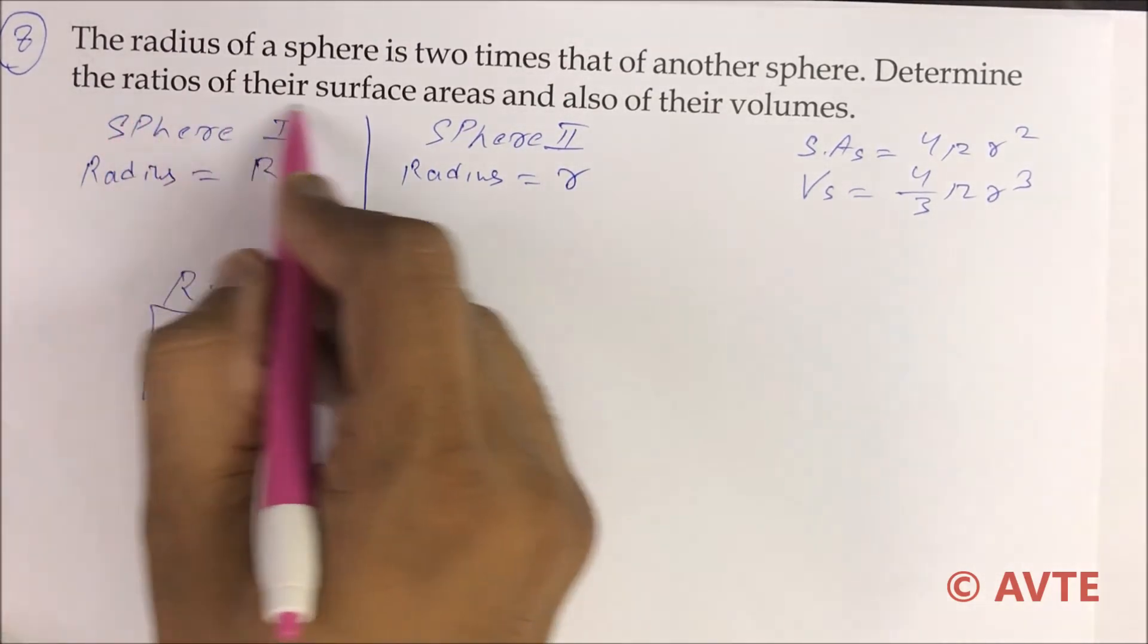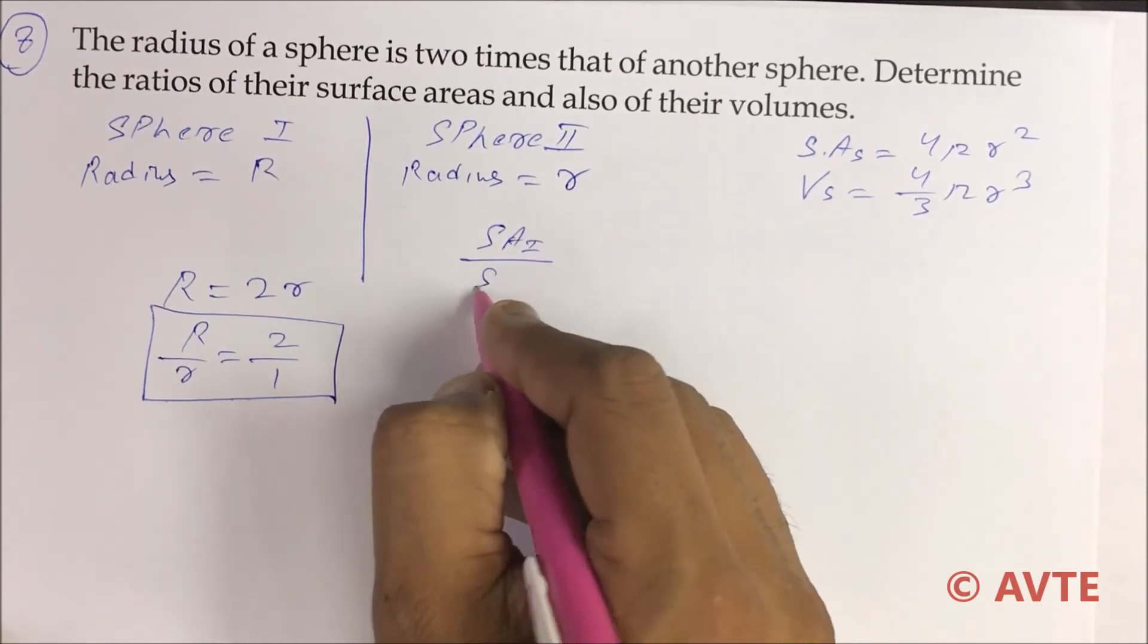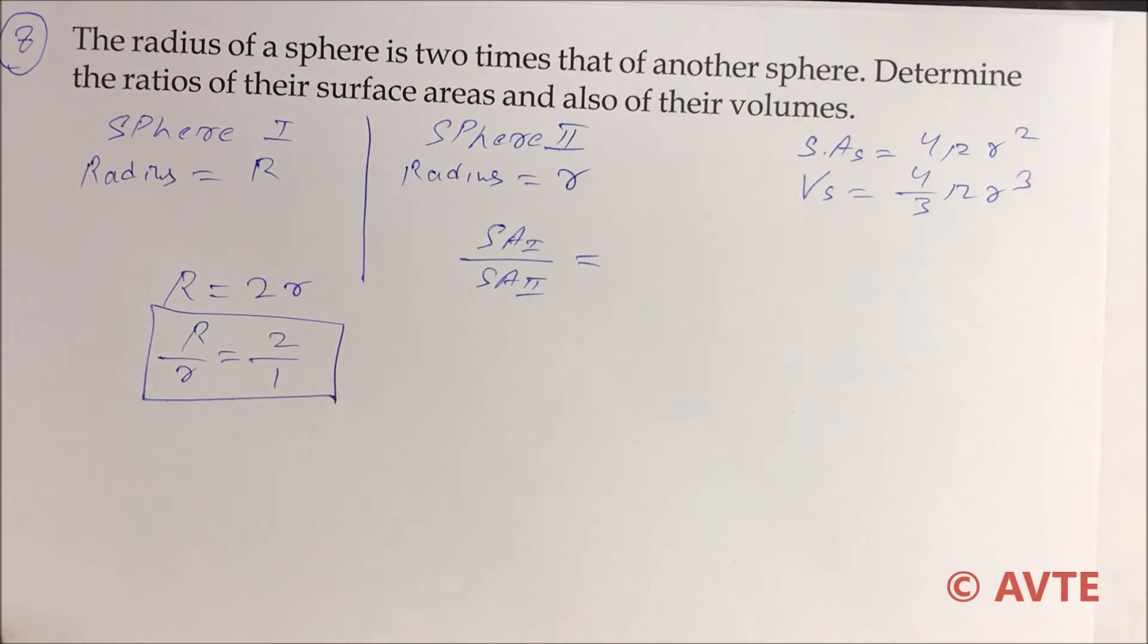So first we have to find the ratio of the surface areas. That means surface area of the first upon surface area of the second. This question is a simple question. You just remember the formula and the given condition.